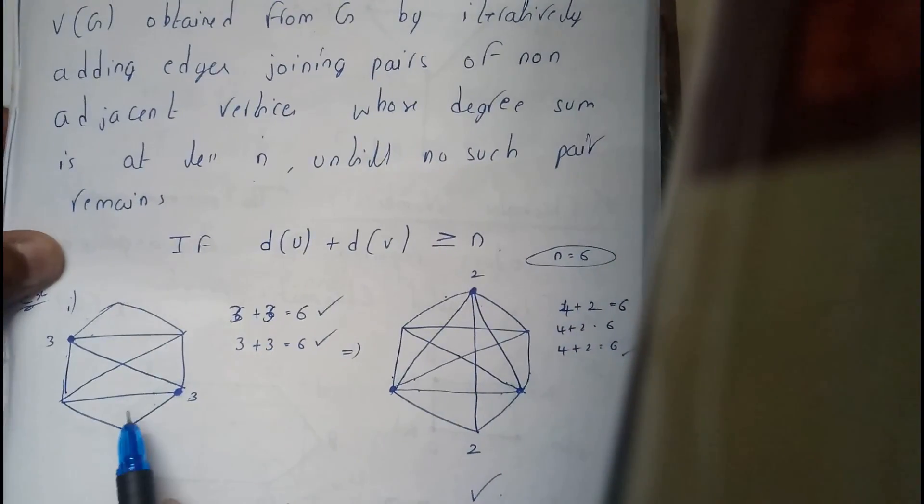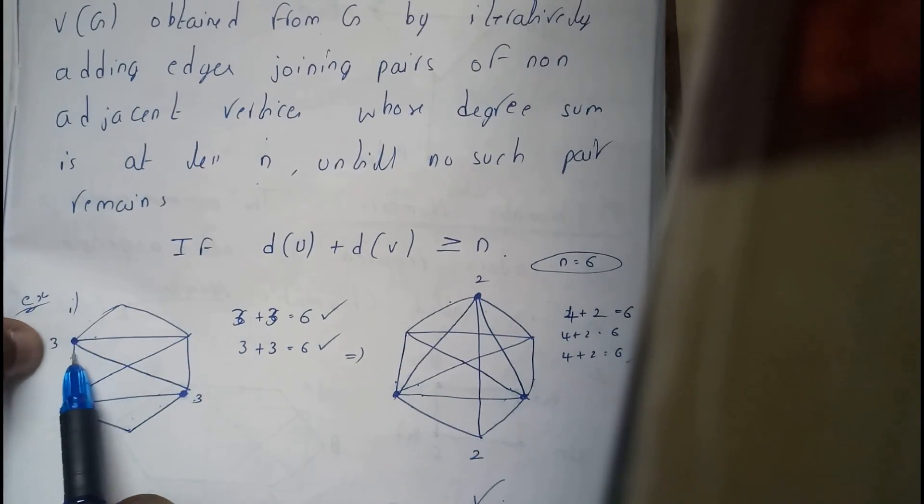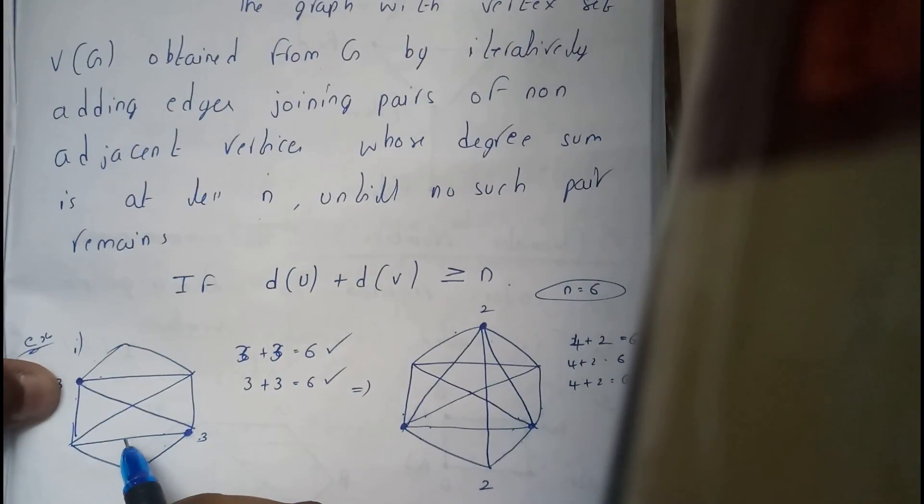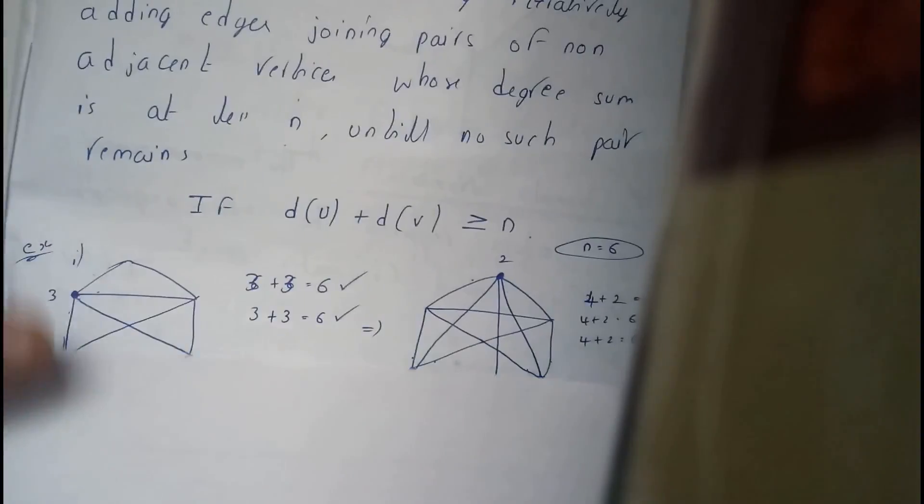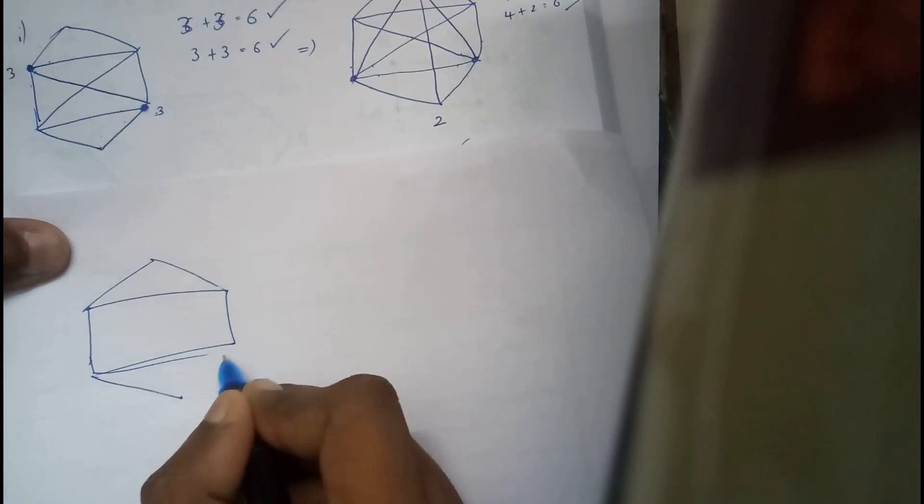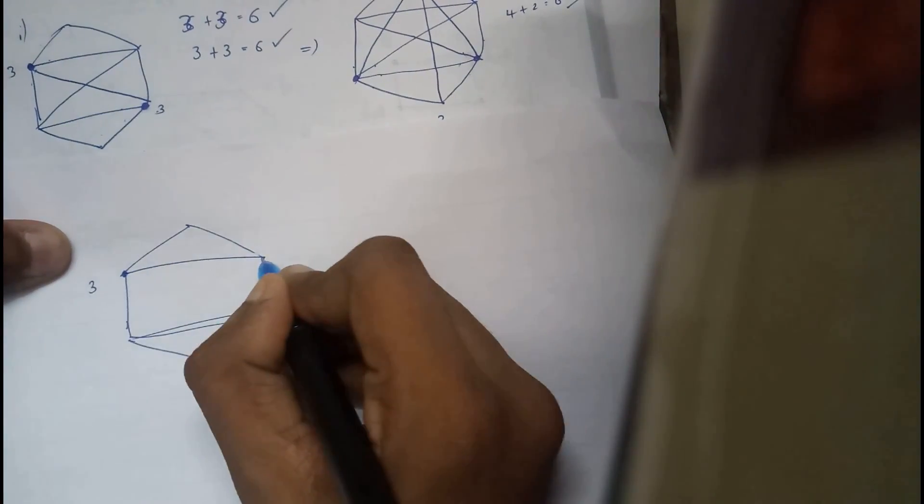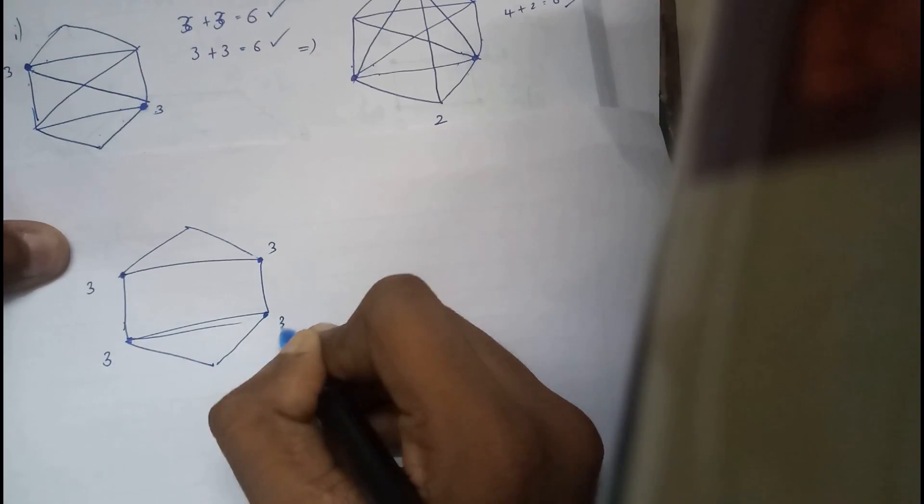So now, this is the diagram. Initially this is also not there. Let me take a piece of paper and I will be going through step by step. That will be a bit better. This is what the given question was. Here there are three, here also there are three, here also there are three, here also there are three.